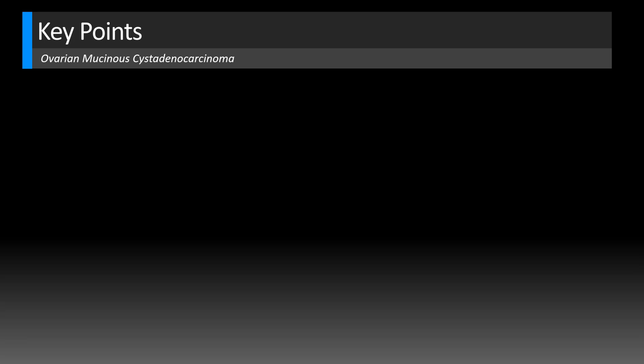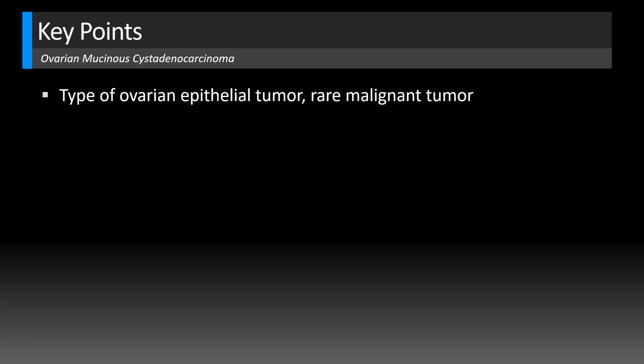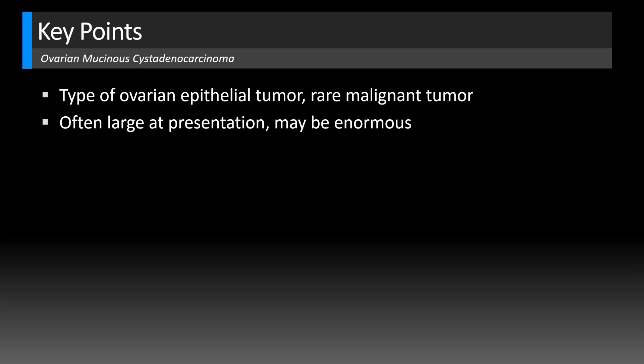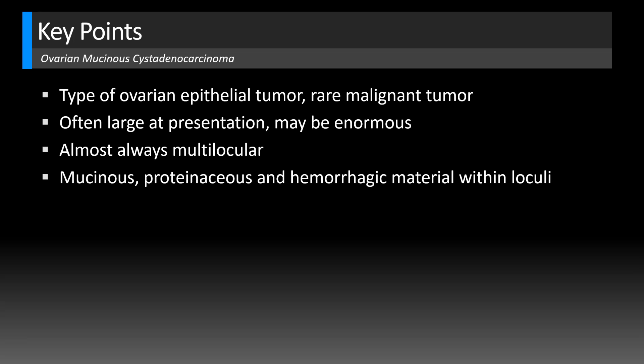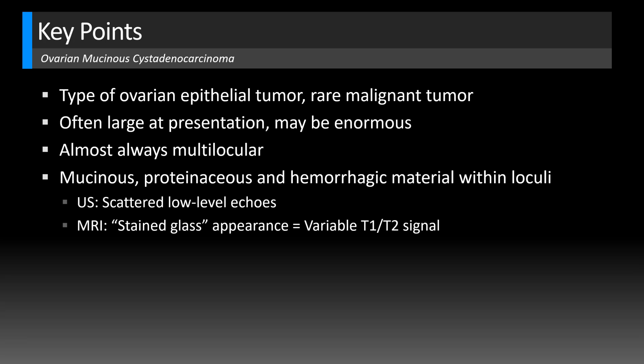Mucinous cystadenocarcinoma is a rare malignant epithelial ovarian tumor. Other epithelial ovarian tumors include serous, mucinous, endometrioid, clear cell, and Brenner tumors. Mucinous tumors are often very large at presentation — sometimes enormous — and are almost always multilocular with multiple septations. Within the loculi there is often mucinous, proteinaceous, and hemorrhagic material, producing scattered low-level echoes on ultrasound that can be difficult to differentiate from endometrioma. Endometrioma is described with homogeneous low-level echoes diffusely throughout the mass, and you shouldn't see vascular solid components as we saw in this case. On MRI this material gives the stained glass appearance with variable T1 and T2 signal depending on mucin viscosity.